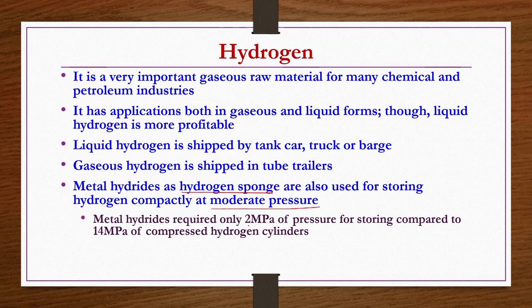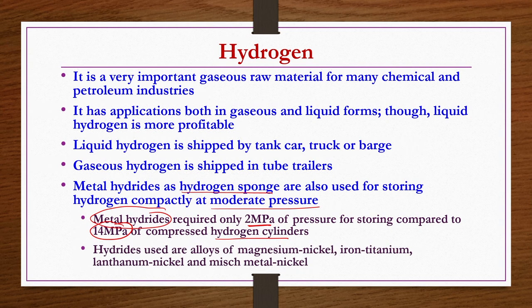Metal hydrates require only 2 MPa for storage, whereas hydrogen cylinders require 14 MPa — seven times higher. That is why metal hydrates are preferred. Common metal hydrates used include magnesium nickel, iron titanium, lanthanum nickel, and mixed metal nickel. Significant research is ongoing to develop newer materials for hydrogen storage.